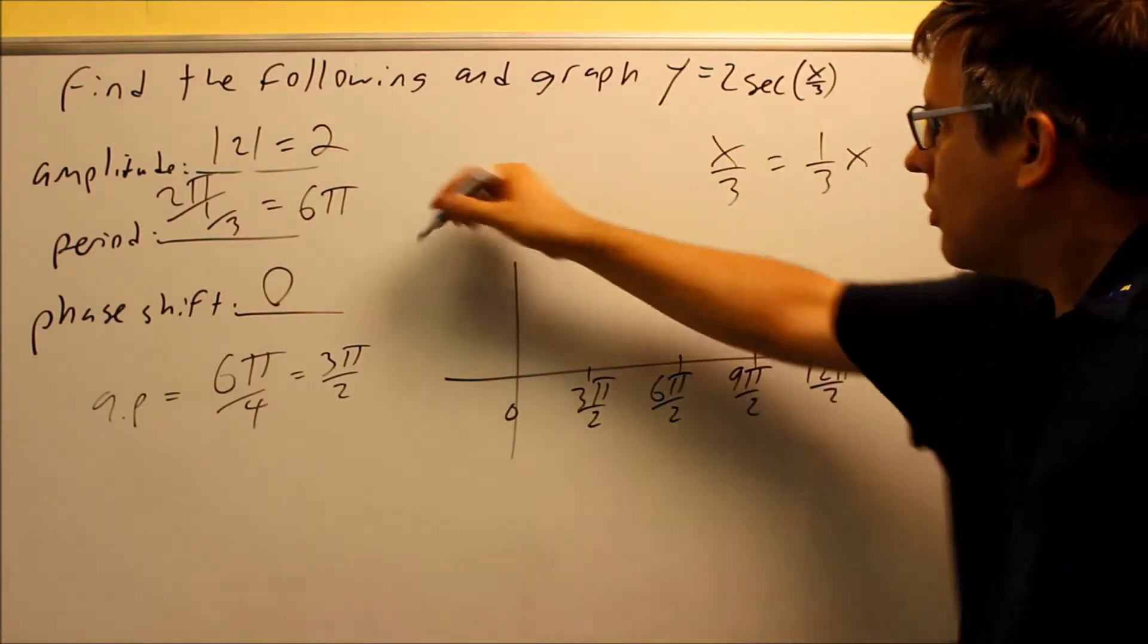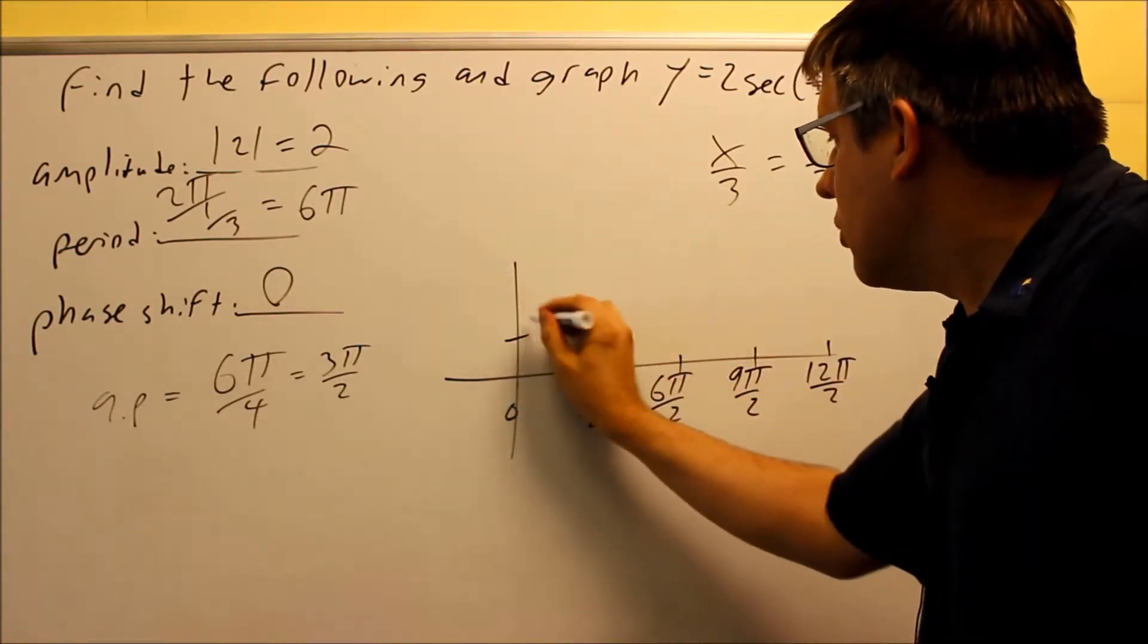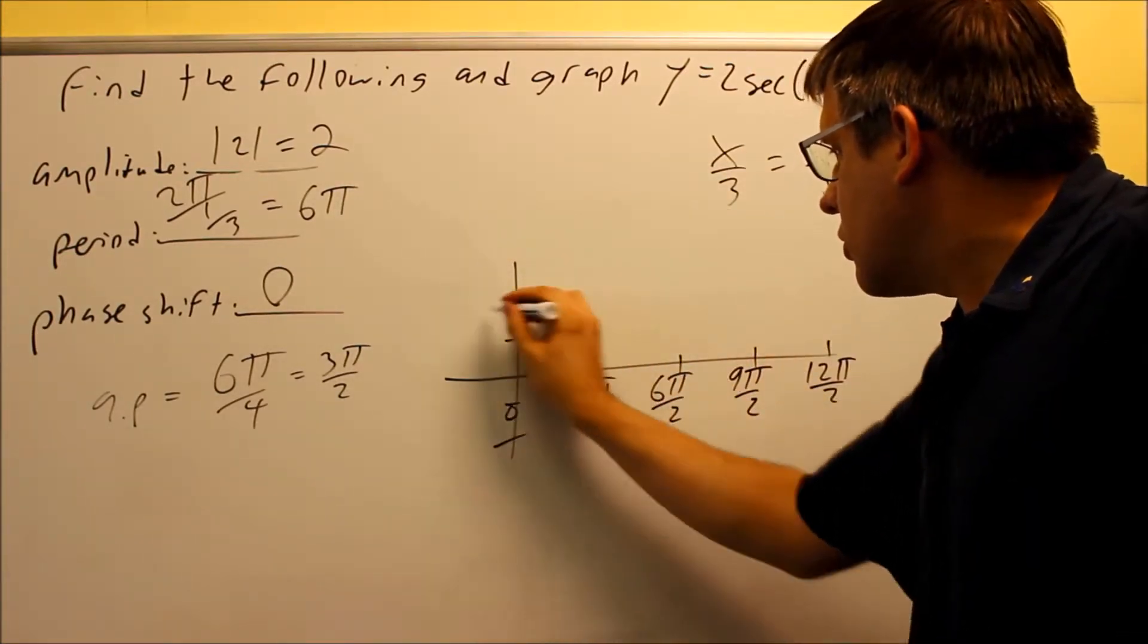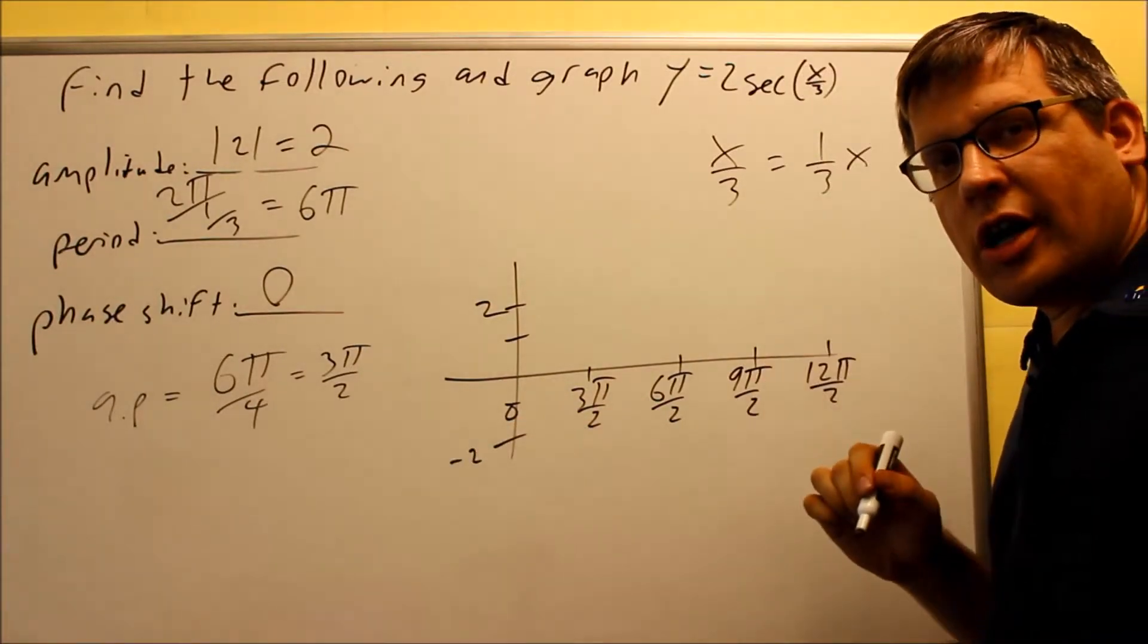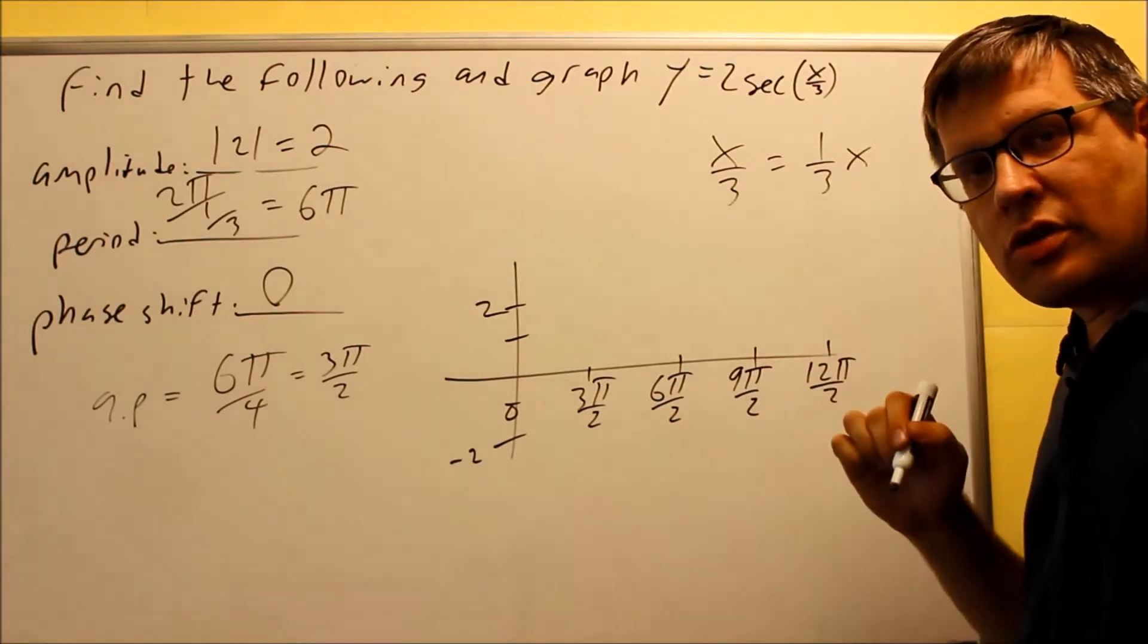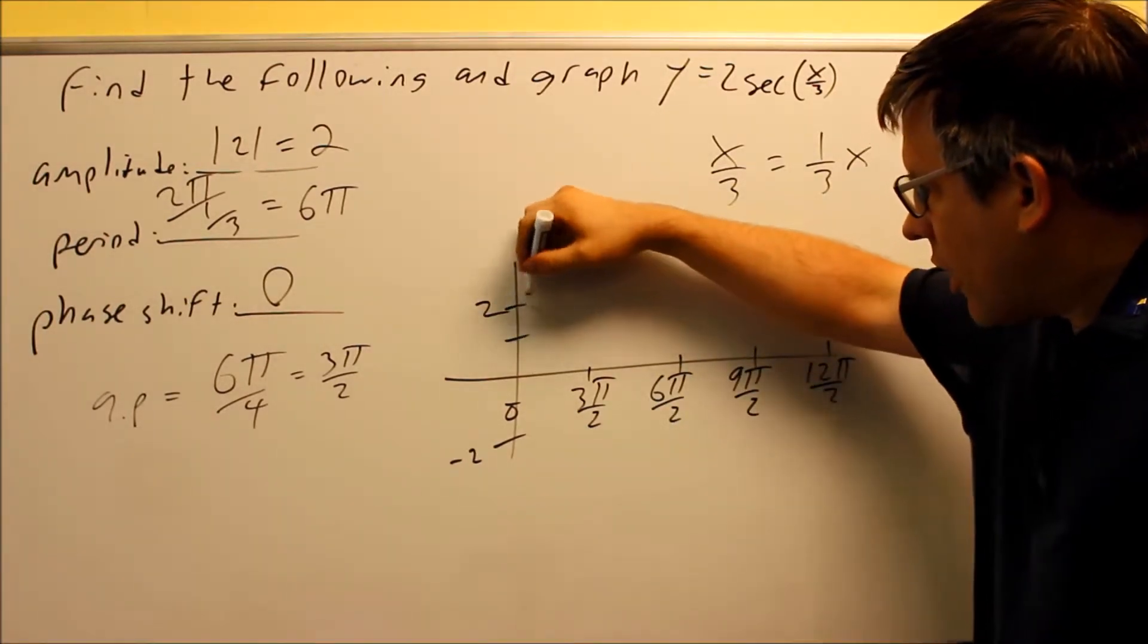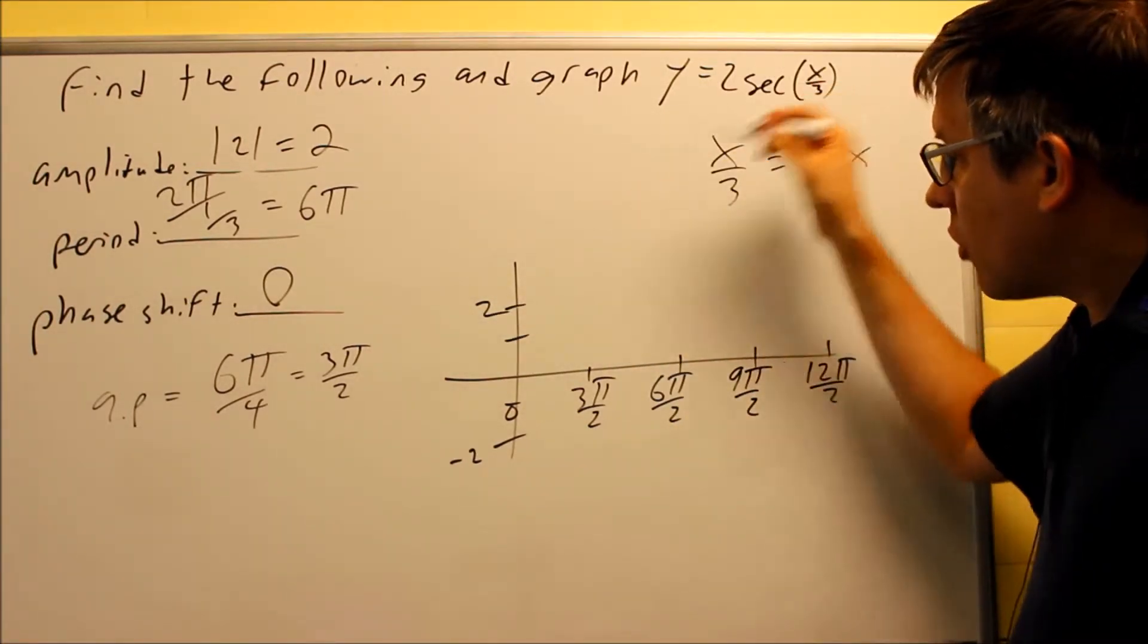I had a 2 in front, which is my amplitude. So here is 2 and negative 2. I want to begin by drawing the secant graph with a dotted line. So the, actually, cosine I'll start with.